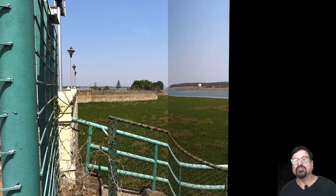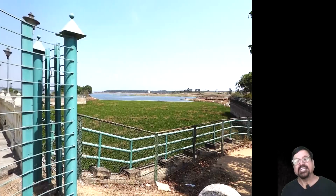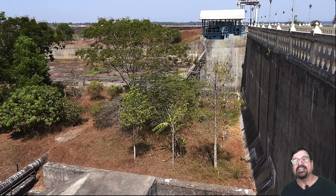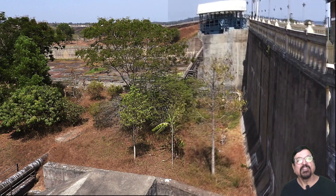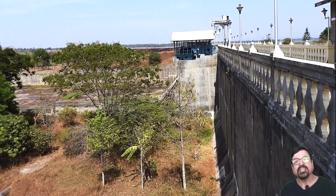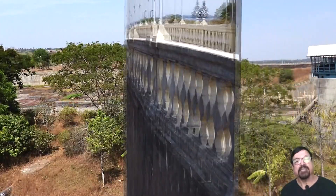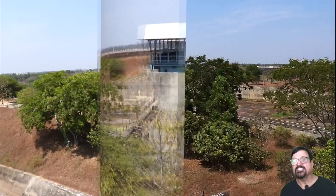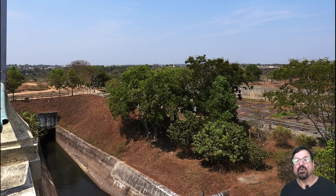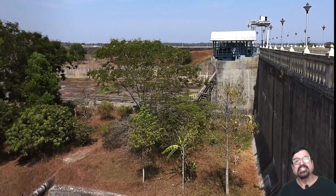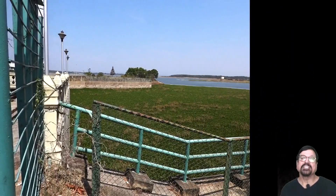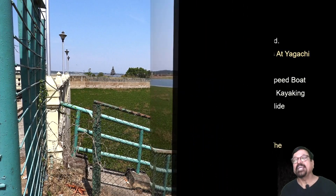You can see the Yagachi Dam here; despite the low water level, it is still meeting certain irrigation and drinking water requirements because water flows through the canals on either side. You can see both the right-side and left-side canals taking water to 10 kilometers and 40 kilometers respectively. Here is the other side of the dam — you can see some water flowing through the canals. It is an excellent landscape to take in.